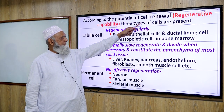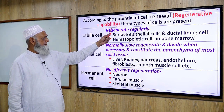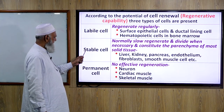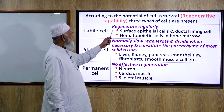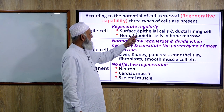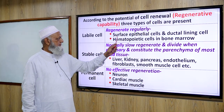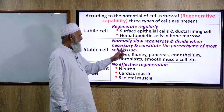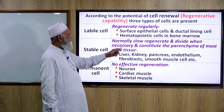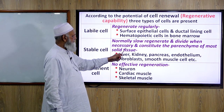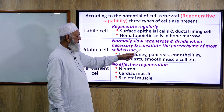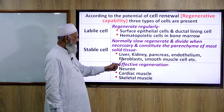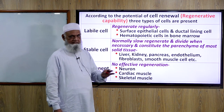According to the potential of cell renewal or regenerative capability, three types of cells are present: labile cells, stable cells, and permanent cells. Labile cells regenerate regularly — examples include surface epithelial cells, ductal lining cells, and hematopoietic cells in bone marrow. Stable cells normally regenerate slowly and divide when necessary, constituting the parenchyma of most solid tissues: liver, kidney, pancreas, endothelium, fibroblasts, and muscle cells.